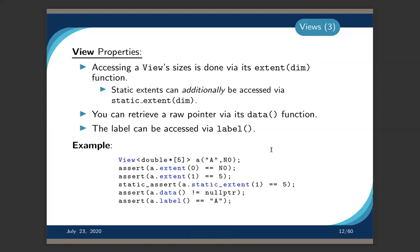You can query a view's properties. The most important is extent() — you give it a dimension index and it returns the size. There is also static_extent(), which returns a compile-time answer for compile-time dimensions and can be used in template arguments. You can get the raw pointer via the data() function, and access the label via the label() function.